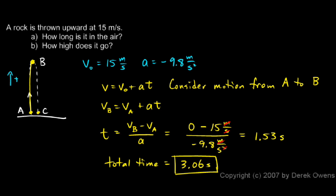Now once I know the time, I can list that up here with my given information. And I'm going to be real specific. I'm going to say the time from A to B is 1.53 seconds, and I'll say the time from A to C is 3.06 seconds. So now in my list of the given information, I have that.